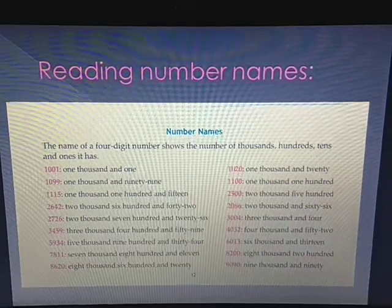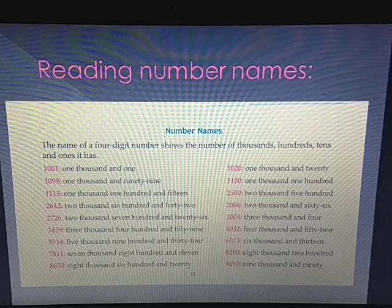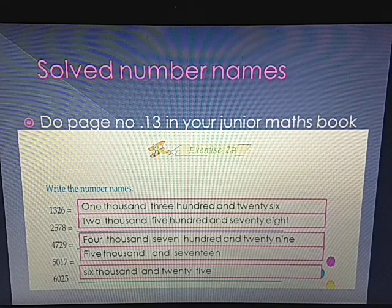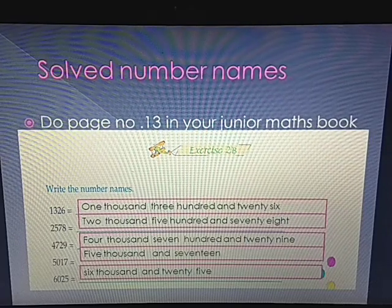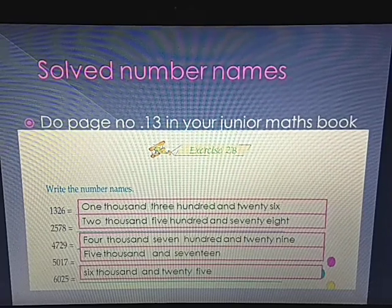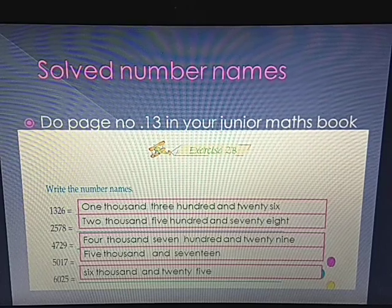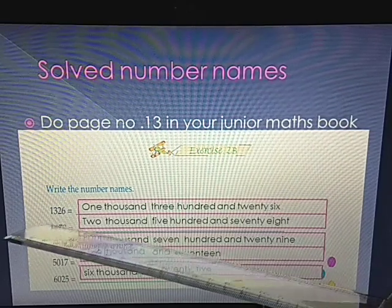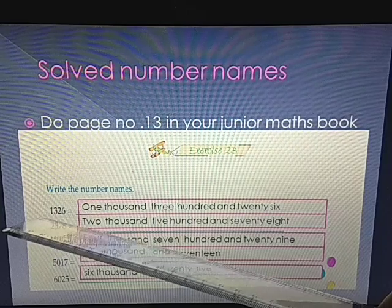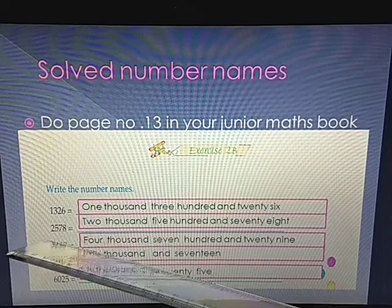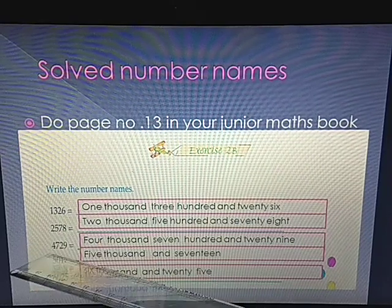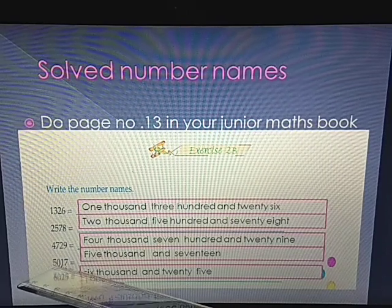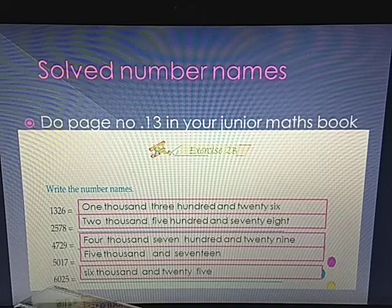So these numbers you will read repeatedly so that you can learn the number names properly. In page number 13, two types of sums are given. Among these, the first 5 sums I have solved as examples: write the number names for 1326, 2578, 4729, 5017, and 6025. The rest of the number names you have to write yourself.